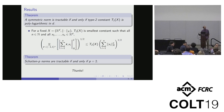We're playing around with some ideas, but the Schatten p norms show that the type-2 constant is not really the full answer, because Schatten p norms have the same type constants as the L^p norms.